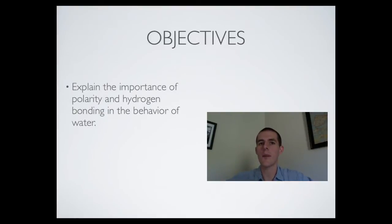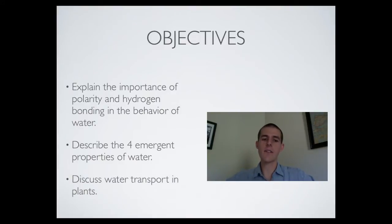We're going to start out with our objectives. These are the three things you need to know by the end of this video. The first thing is to be able to explain the importance of polarity and hydrogen bonding in the behavior of water. The second thing you need to know, describe the four emergent properties of water. Emergent just means the properties that make water different from other substances. And you need to be able to discuss water transport in plants. So those are our three major things, let's get into it.